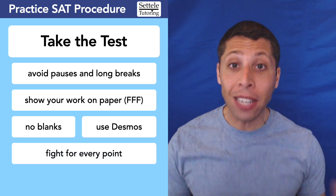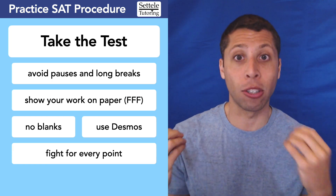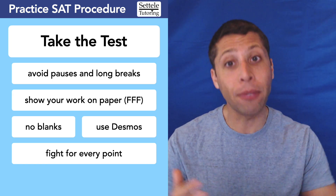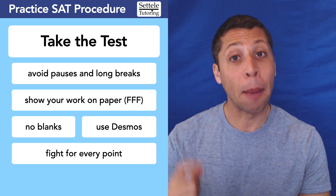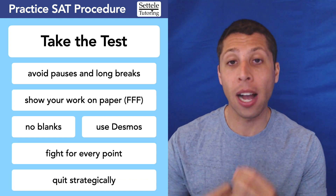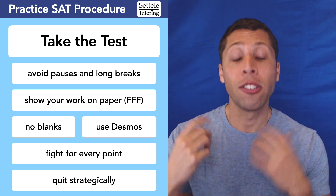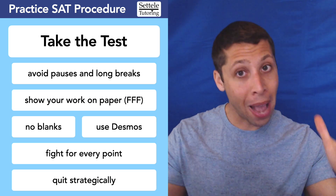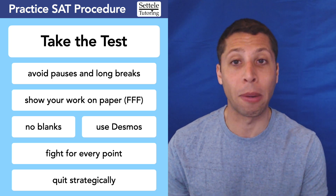Fight for every point, not just in math. You really don't want to casually be taking a practice test — they're so important for your prep, so you want to treat it like it's the real thing. Part of that is going to mean quitting strategically. If you have a question that is just taking too much time or you don't think you'll be able to answer, then pick a letter randomly, guess, and move on so that you don't run out of time on other stuff at the end of the section. This is especially important in reading where those passage-based questions can slow you down, but there are really easy questions at the end of each section, so make sure you get to those.